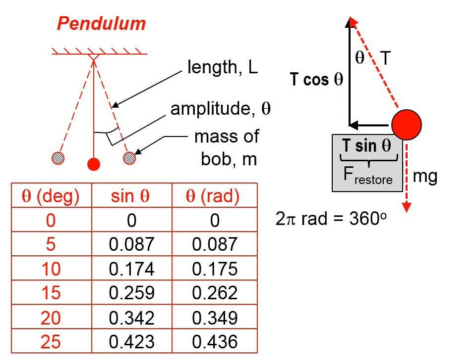Now, look at that. Look at how close the sine of theta and theta in radians match, especially for small angles. And you can see as the angle gets bigger and bigger, the deviation becomes a little bit greater.